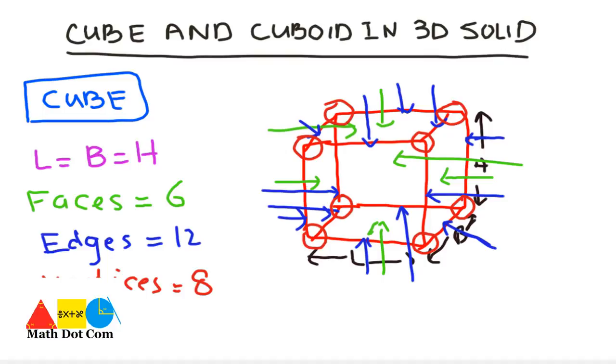So, another property it has, the opposite faces are parallel in cube. So this is how we can represent the cube by its faces, edges and vertices.